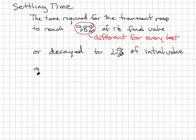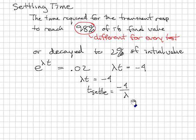Remember that the transient response decay comes from the factor e to the lambda t. So I want to know when does this become 2%, 0.02? Well, that happens when lambda t is equal to minus 4. So if we set lambda t is equal to minus 4, we can say that t settle is equal to minus 4 over lambda.